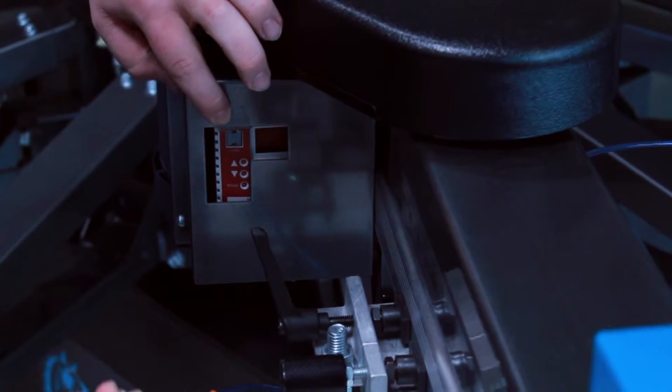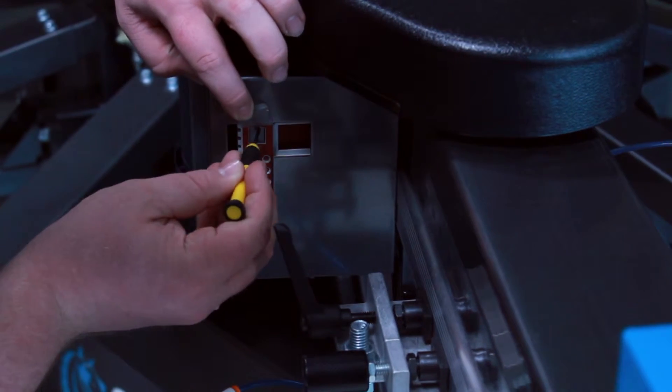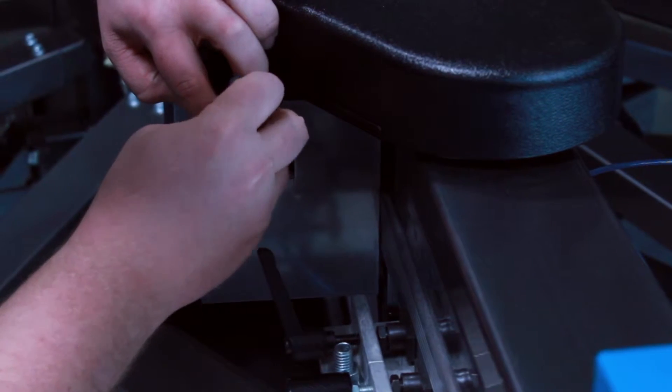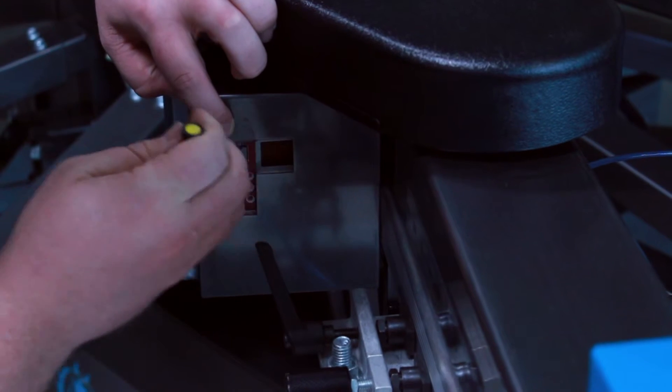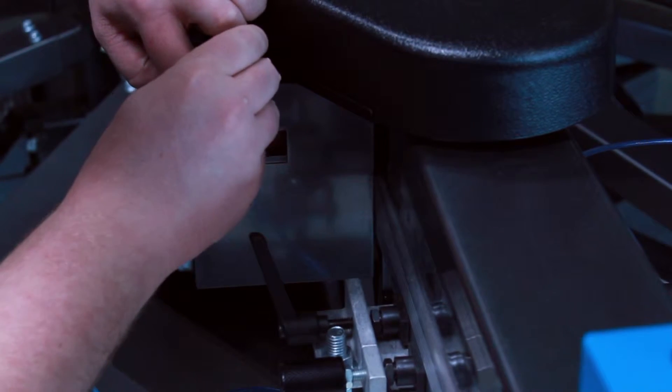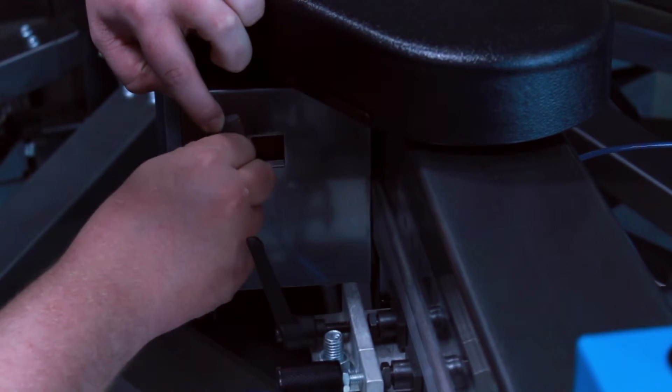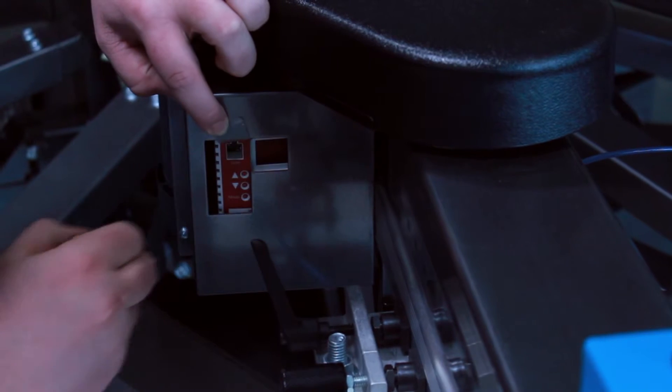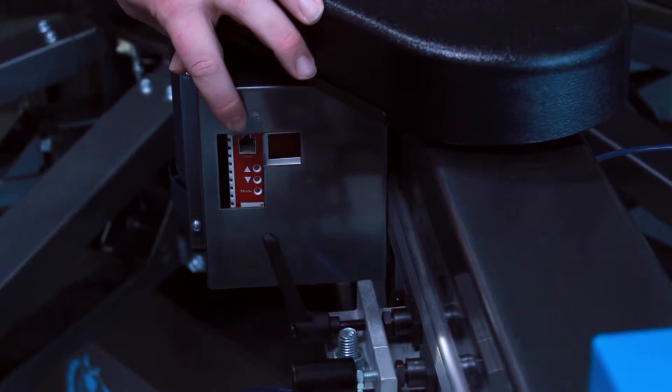Then use your small precision screwdriver to work the EEPROM right out. Be careful when you're prying it out that you don't damage the pins behind it. Once you've taken the old EEPROM out,